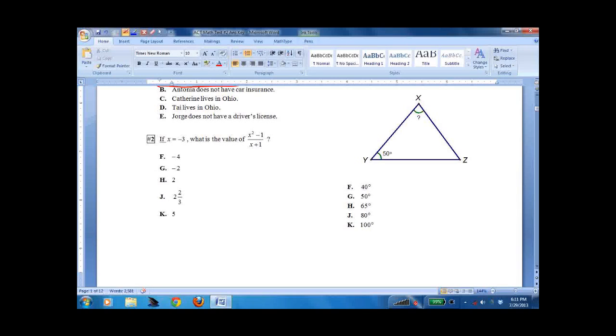Number 2 is just what I call plug-and-chug. If x equals negative 3, what's the value? Most people do it this way. Negative 3 squared minus 1. Negative 3 plus 1. You're going to get 9 minus 1 over negative 2, which is 8 over negative 2, which is negative 4. So it's F.